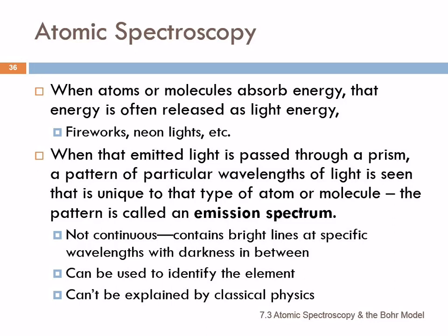When we take that emitted light and pass it through a prism, we do not see a continuous rainbow. We see a pattern of lines — bright lines of color with darkness in between. The pattern is unique to each atom or molecule, and it's called an emission spectrum. It's not continuous, and it can be used to identify the element, almost like a fingerprint.